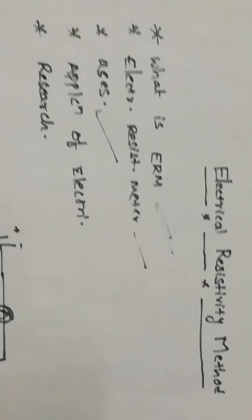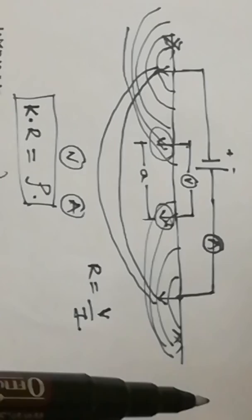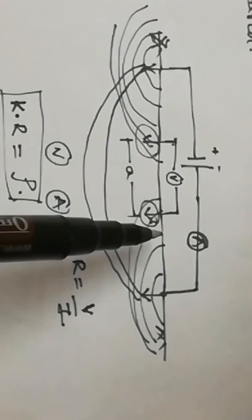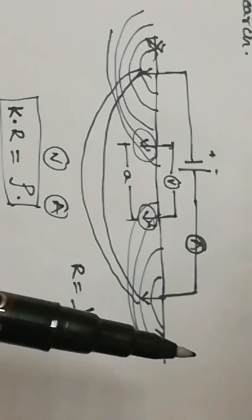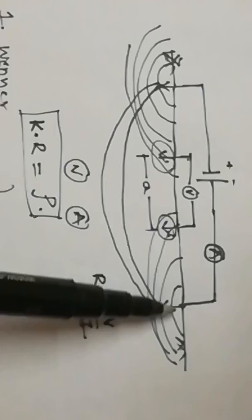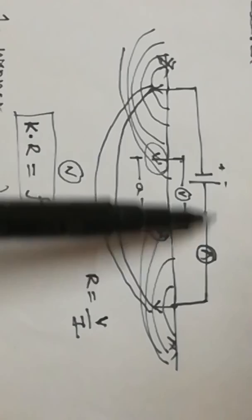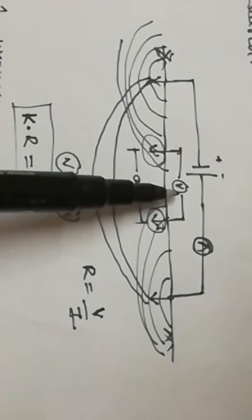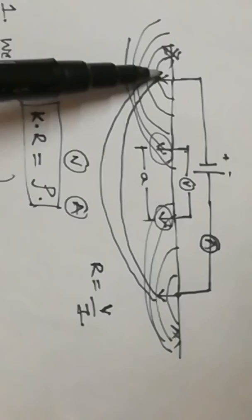Electrical resistivity method contains four probes. The standard configuration contains four electrodes. In the outer two electrodes, we are going to pass current — either AC current or DC current — and we are going to measure the current passing through it. In the inner two electrodes, we are going to measure the voltage difference.